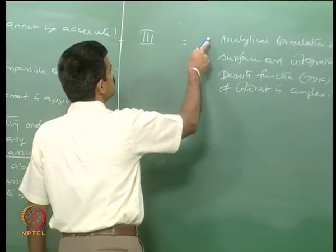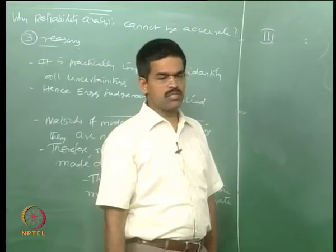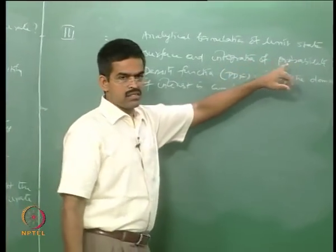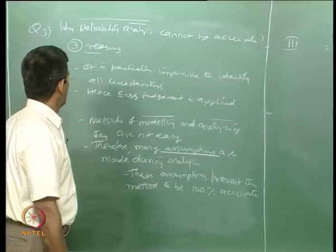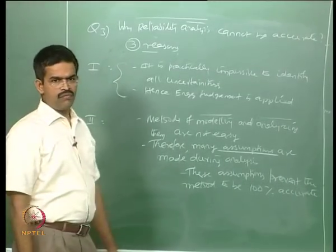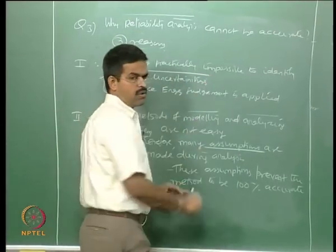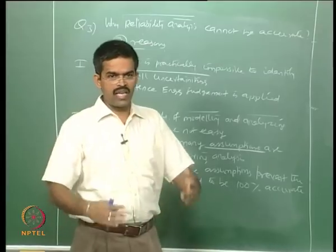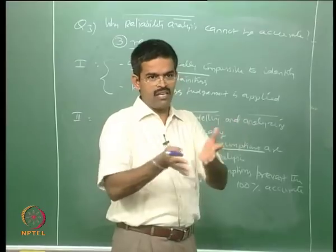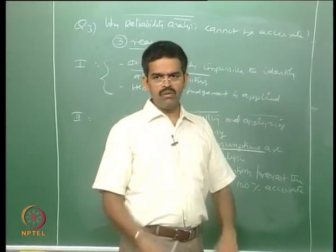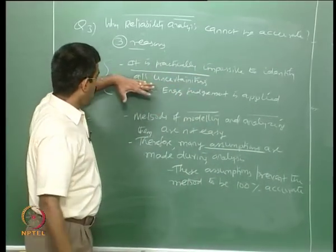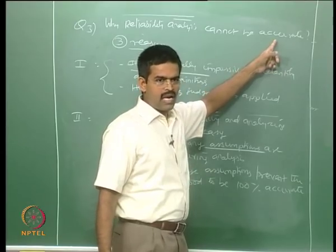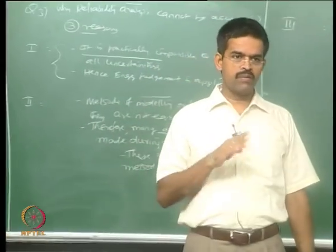These three reasons clearly declare that reliability analysis can never be 100 percent accurate. There is always a probability of accuracy attached to reliability methods by default, and all these reasons cannot be corrected. You cannot say you will do analysis and modeling without any assumption or idealization — every modeling or analysis tool has structural idealization and certain assumptions, which prevent 100 percent accuracy. Reliability methods are not 100 percent accurate.